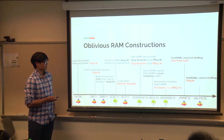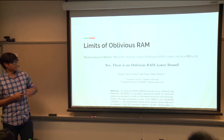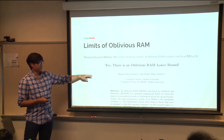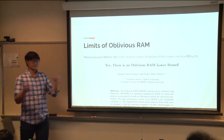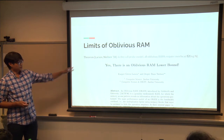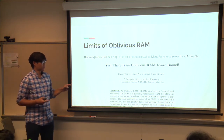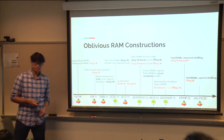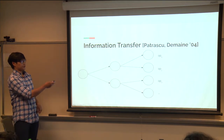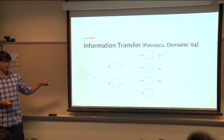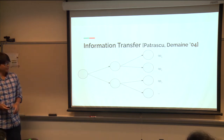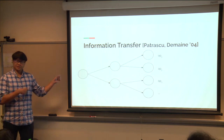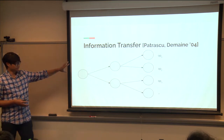In seminal work by Casper that won Best Paper at Crypto, they showed oblivious RAMs require omega log n overhead — making the log n construction tight. This was the first result that took cell probe lower bounds and applied them to these data structures. The technique used is called information transfer, introduced by Patrascu and Demaine in 2004.